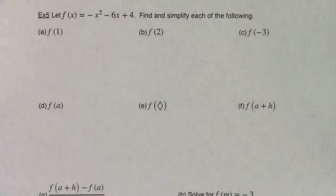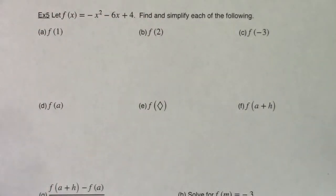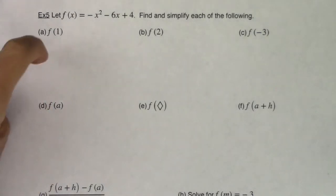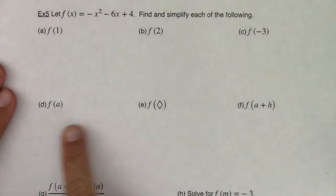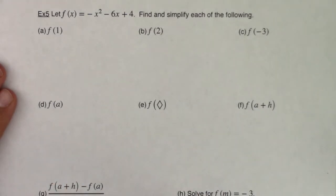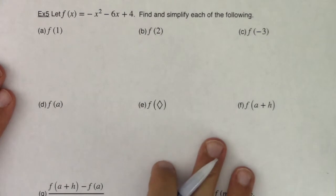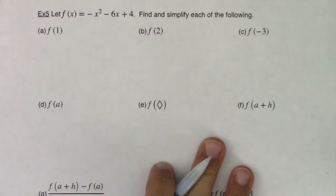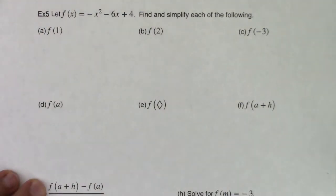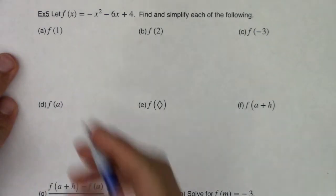We're at Math 31, let's take a look at Example 5 and practice function notation. For parts a, b, and c I'm going to do them by hand, then flip to the calculator to show you the store function so you know how to use it. The store function is useful when plugging in numbers for x values, but won't help for parts d through h — we'll do those by hand.